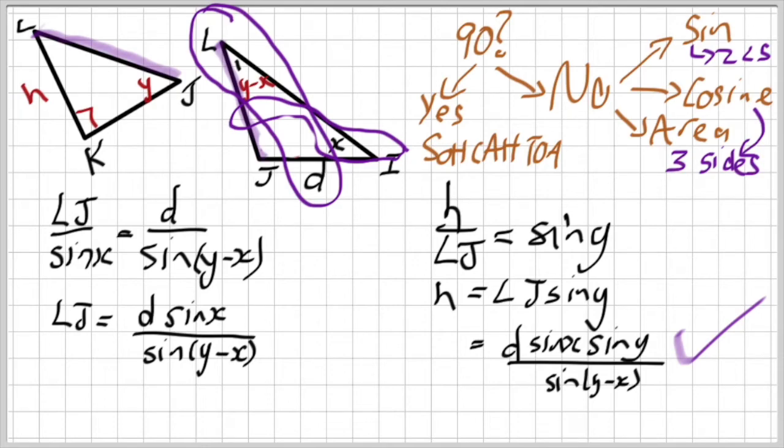Simple and straightforward, ladies and gentlemen. So, there's always a logical process. Is there a 90 degrees? Yes or no. If it's a yes, SOCATOA. If it's a no, well, I'm going to ask either sine, cosine, or area rule.